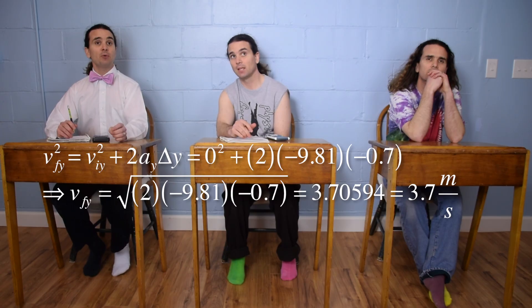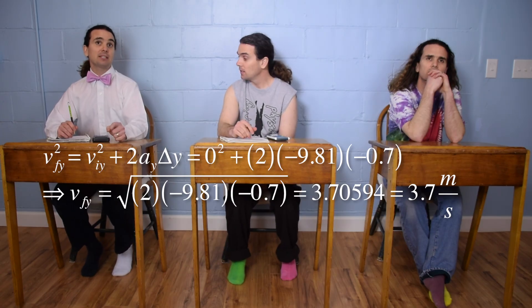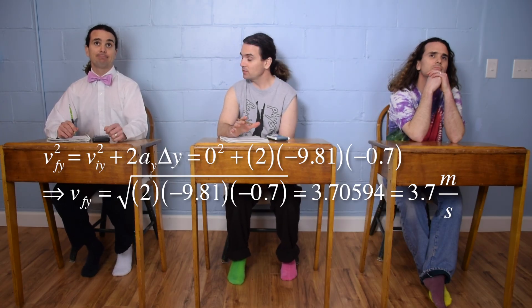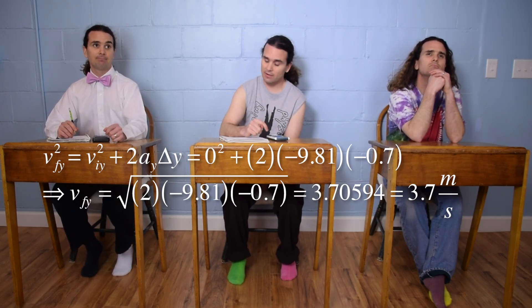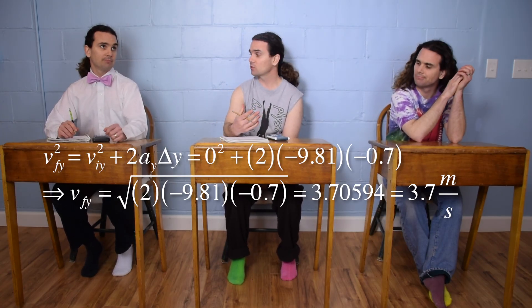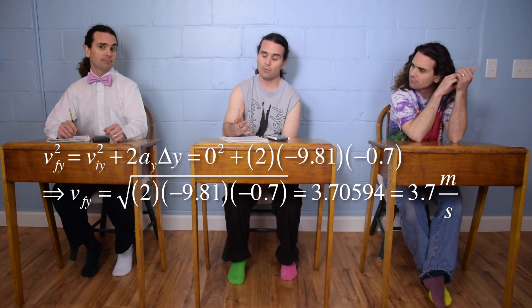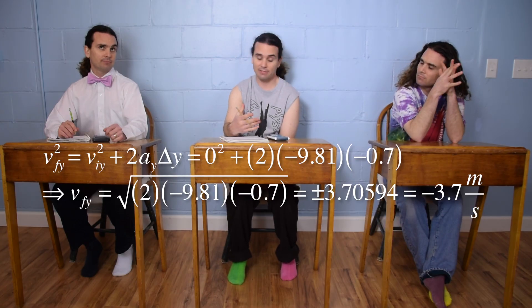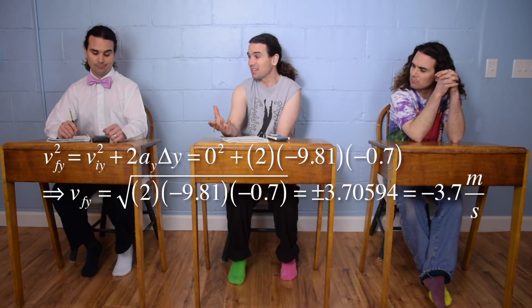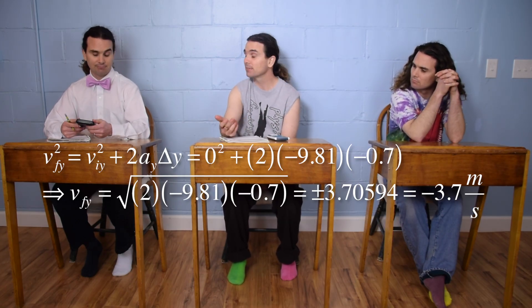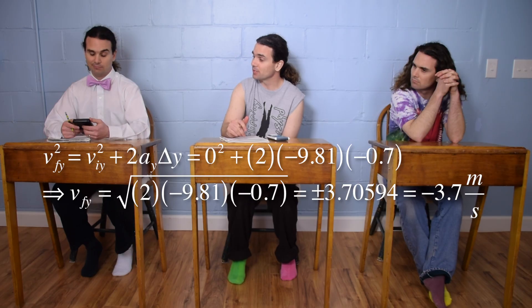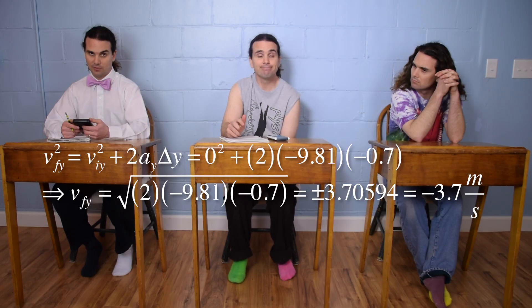That works out to be 3.7 meters per second. Actually, remember, you need to be smarter than your calculator. Anytime you take the square root, you need to decide whether it's positive or negative, because the solution could be positive or negative. And because the ball is going down, it's negative 3.7 meters per second.